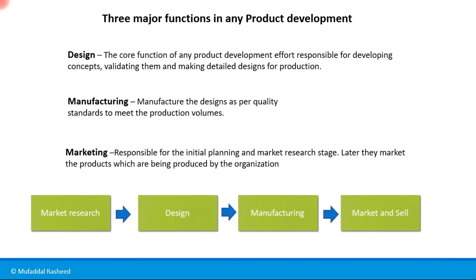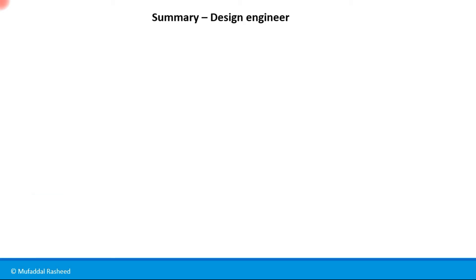The flow of activity in a typical product development setup starts with market research, which becomes the input for the design team. The design team develops concepts and details the designs for manufacture. Those designs are given to the manufacturing team to set up assembly lines, infrastructure, and production processes. Finally, those products are marketed and sold by the marketing team.